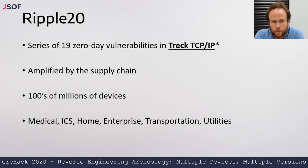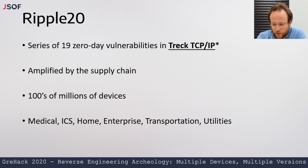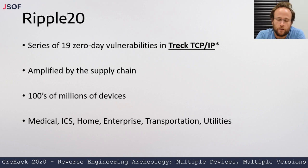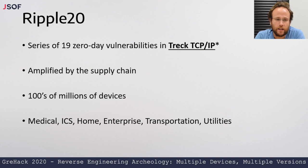What is interesting about this series of vulnerabilities is that they were amplified by the supply chain. Despite the fact that they were all found in this one piece of software called Trek TCP/IP, written by an American company called Trek, Trek had so many clients and sold the software for so many years, and their clients had more clients, leading to the vulnerabilities reaching hundreds of millions of devices across a whole range of verticals. In total, there are probably billions of devices containing the Trek TCP/IP stack, but our estimation is that hundreds of millions of devices are actually vulnerable.